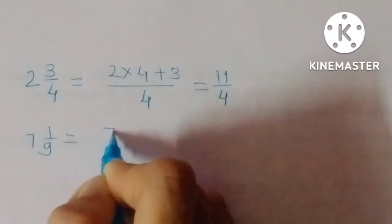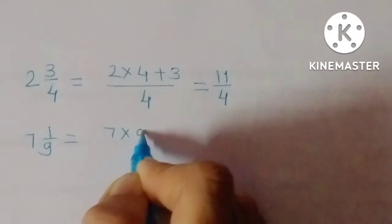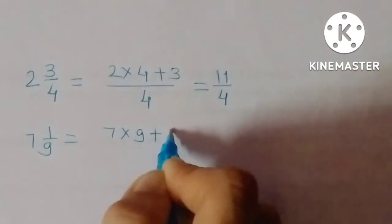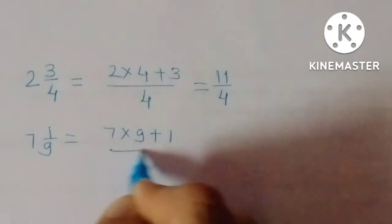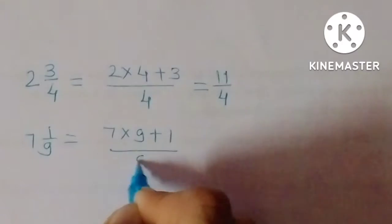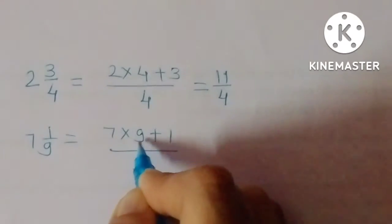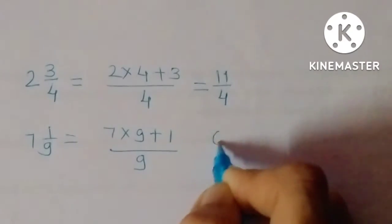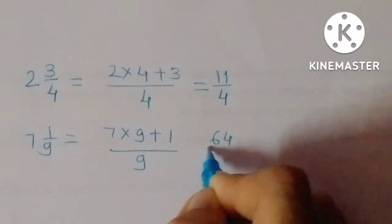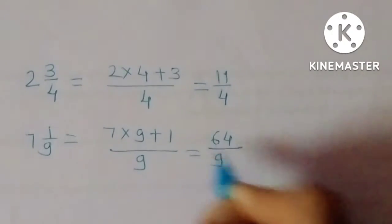7 into 9 plus 1, upon 9. 7 nines are 63, and 63 plus 1 gives 64 upon 9.